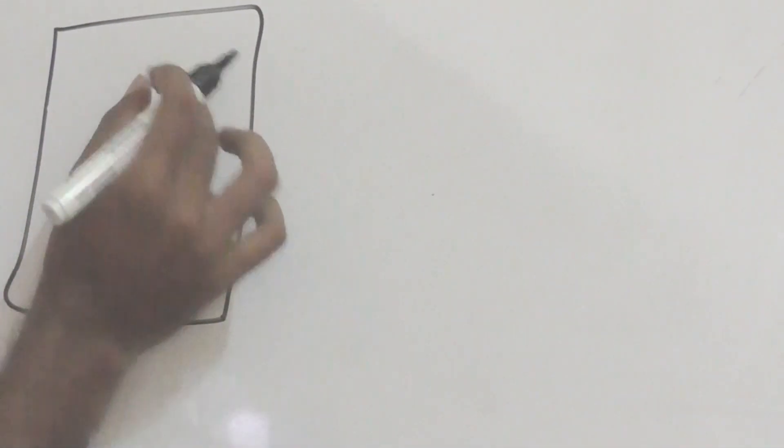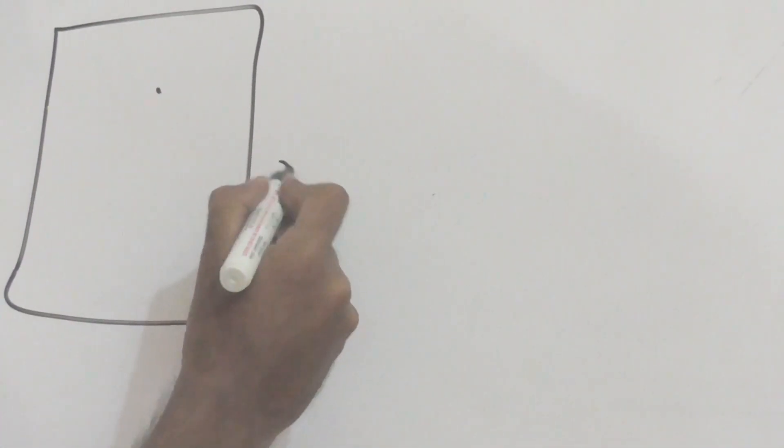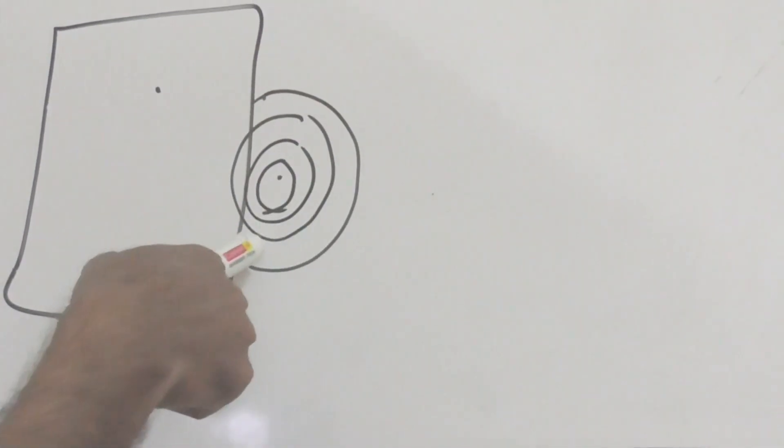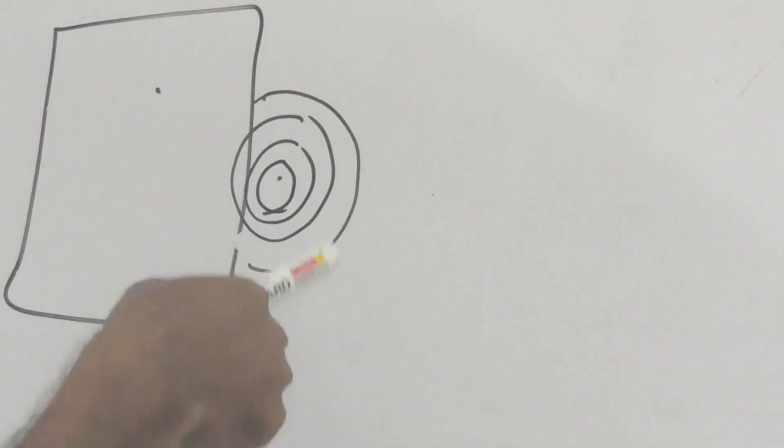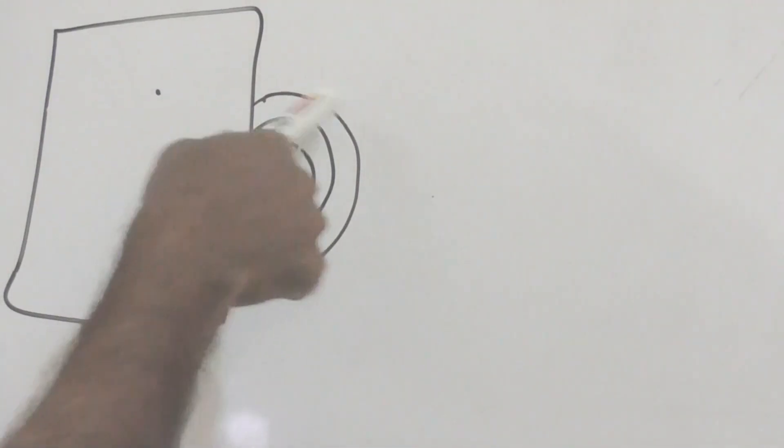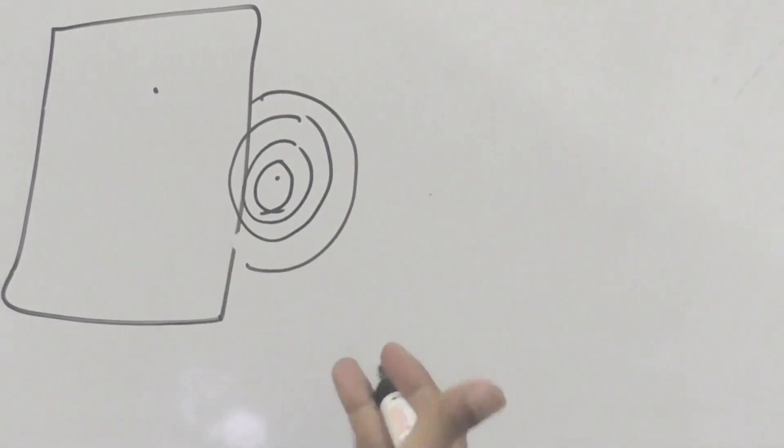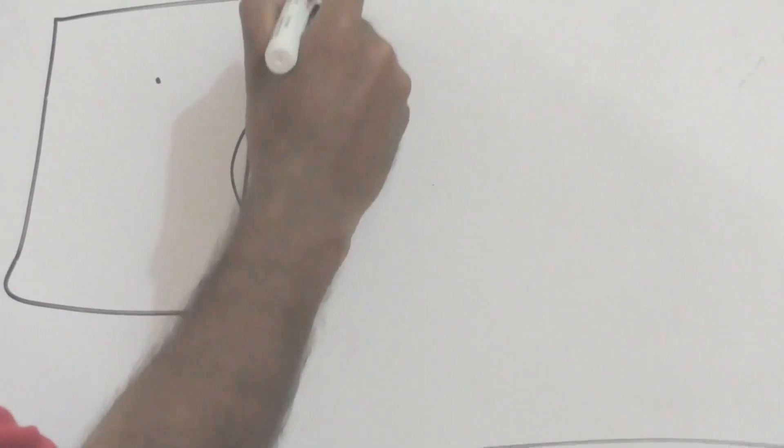So if we zoom into this portion, it will look something like this. These are the coils of wire in the hardware. I will be showing it to you in the practical demonstration after this. So these are the coils of wire. And whenever electricity is passed through this coil of wire, a magnetic field will be generated. Let's assume that these are the magnetic fields.